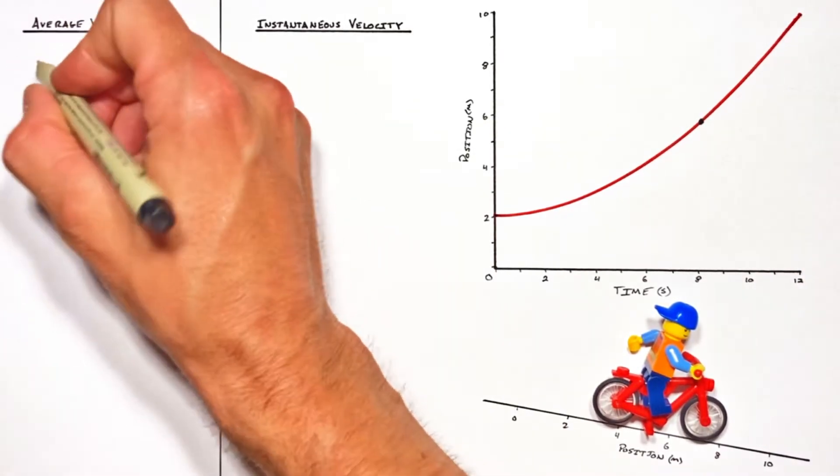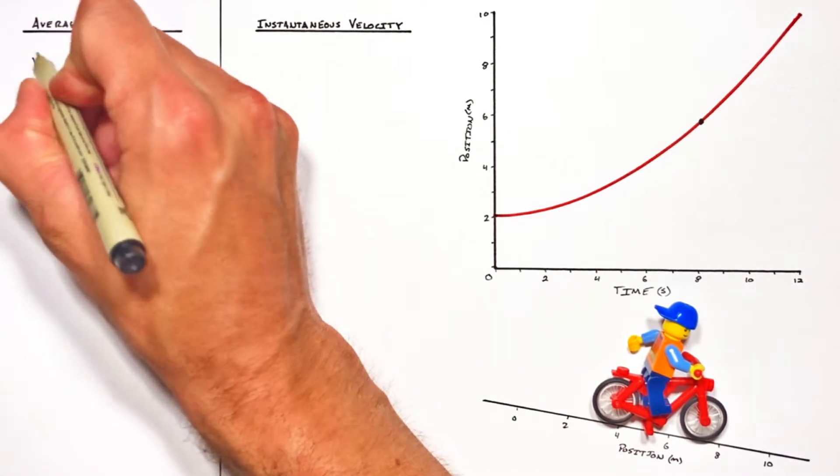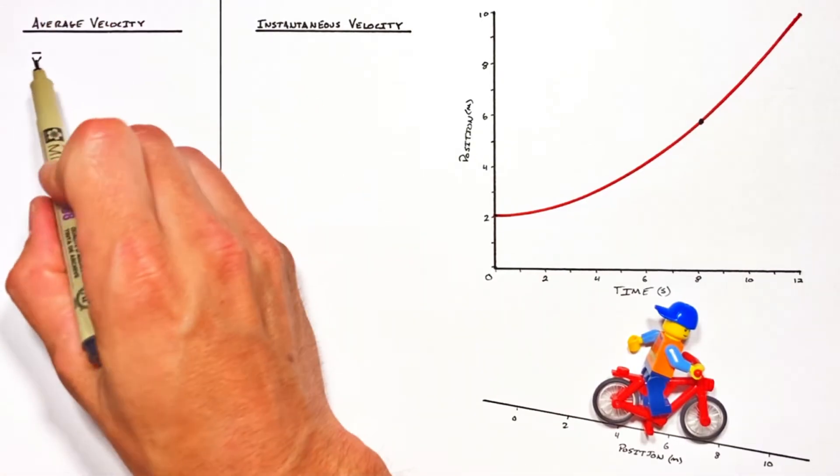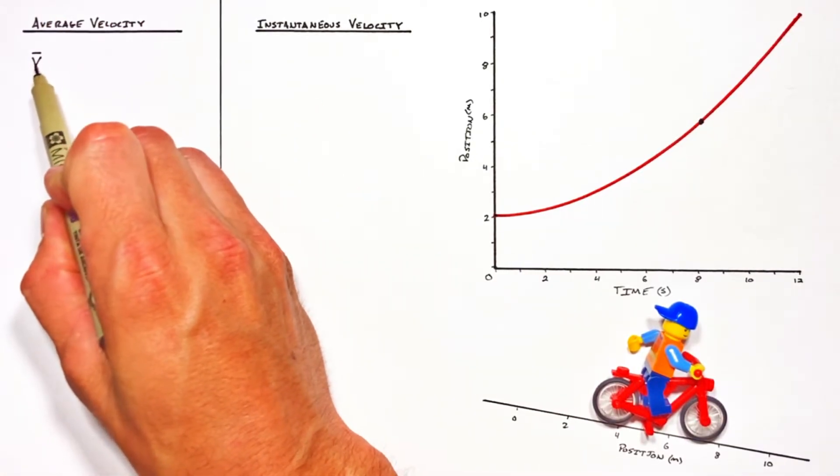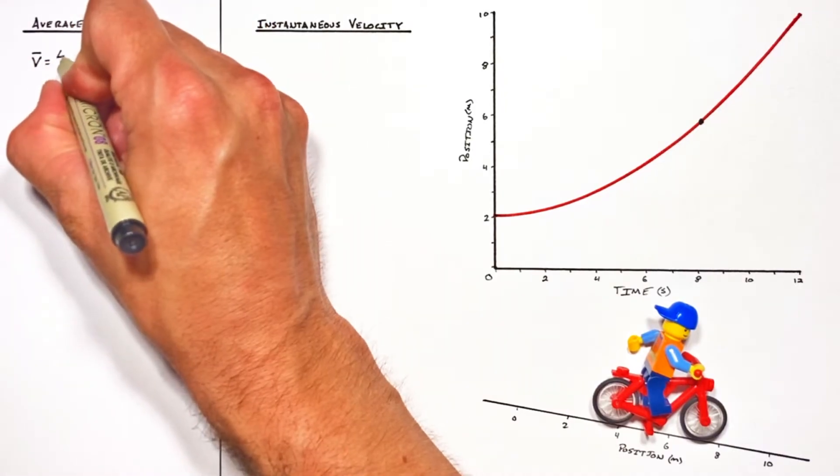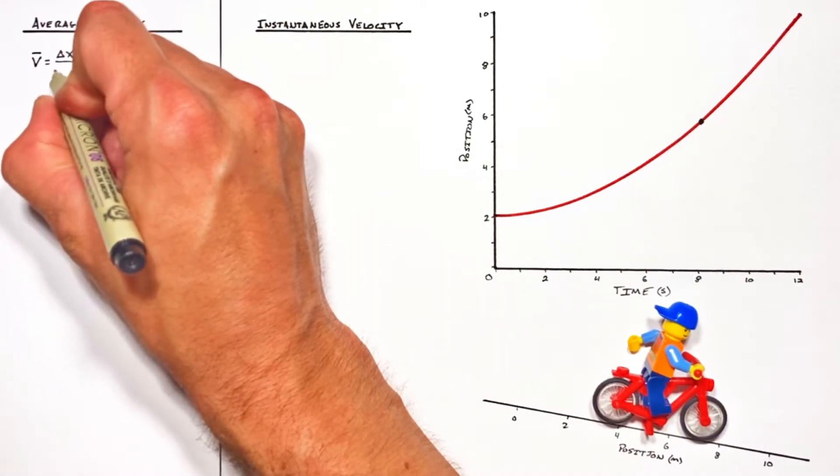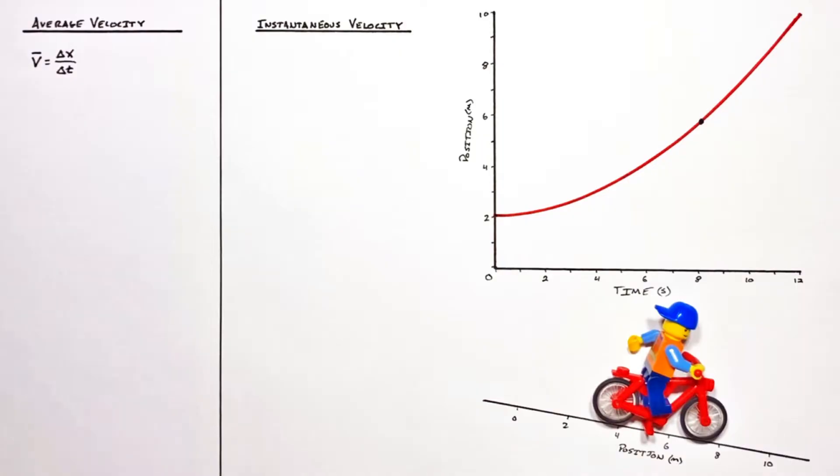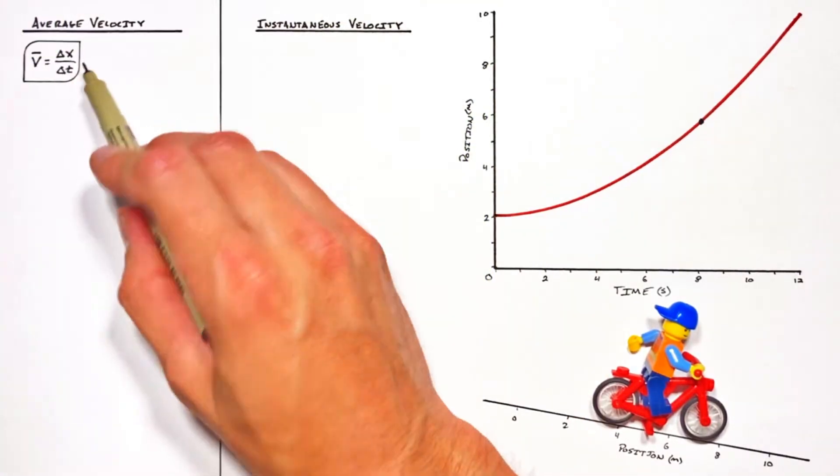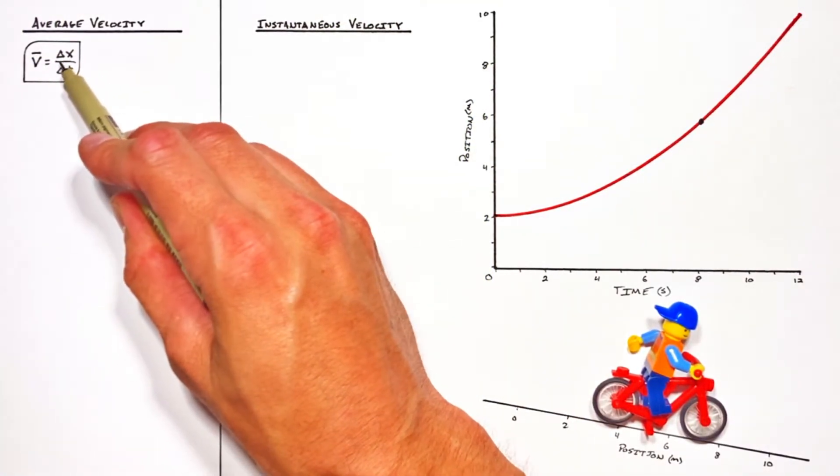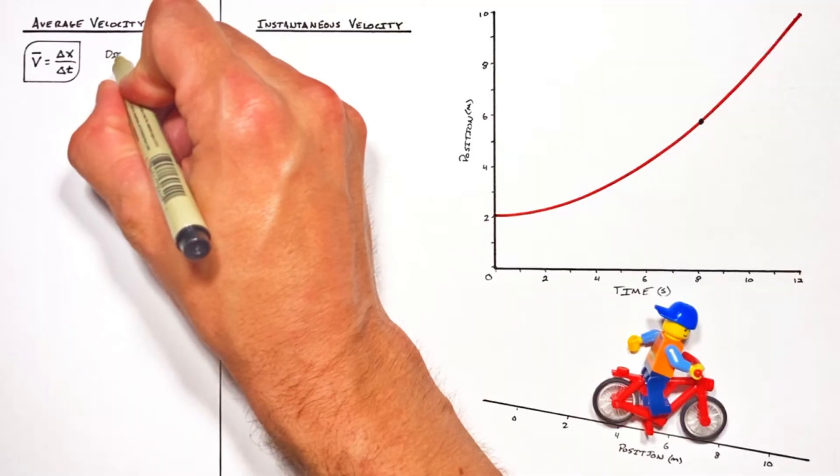Now starting with the average velocity. Average velocity is given by V with a little bar over it, that line right there, bar, that just means average. And that's equal to change in position over change in time. Now you may recognize this little change in position. That's what we call displacement.